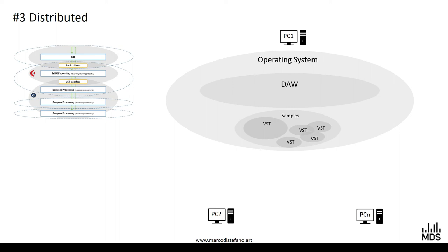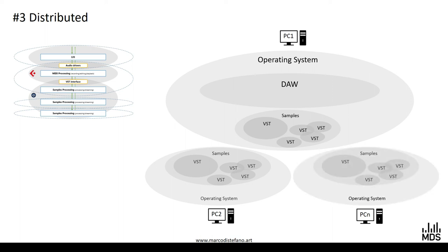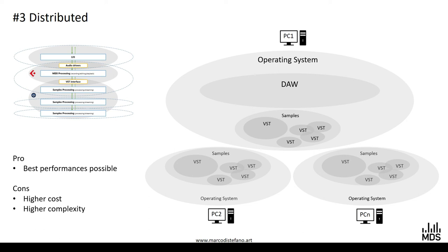In detail: PC one still has your operating system, DAW with projects, and some samples and VSTs loaded. It doesn't make sense to have a PC with only the DAW, unless it's a laptop with limited capabilities. Then you have a second PC with only the samples processing and all the VSTs, and optionally a third PC. The pros are that you can reach the best performance possible — the more PCs in the rig, the better. The cons are high cost and high architectural complexity.